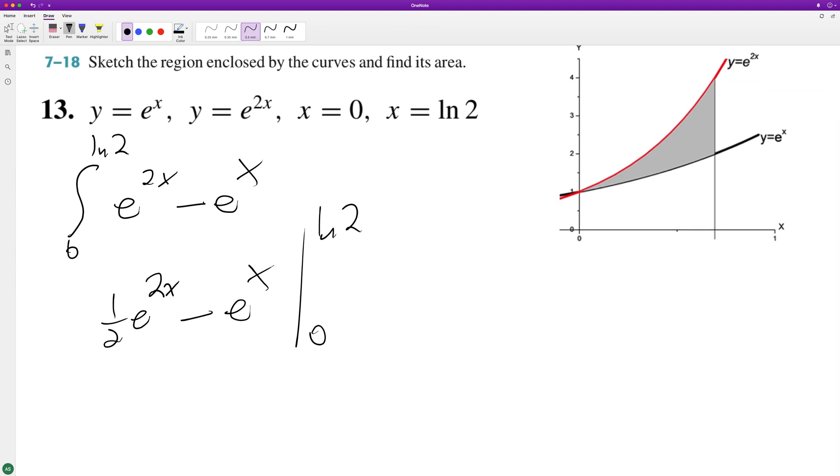Putting these down, starting off with natural log of 2: one-half e^(2 natural log of 2). This is the same thing as putting this up and getting 2 squared or 4, so this just becomes 4. So minus e^(natural log of 2), minus one-half e^(2 times 0) minus e^0.